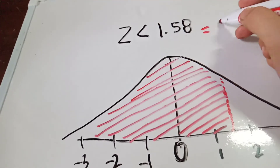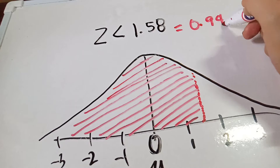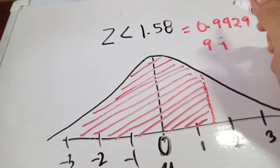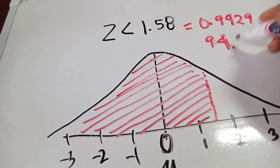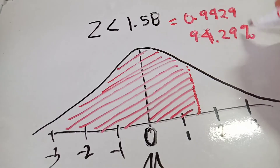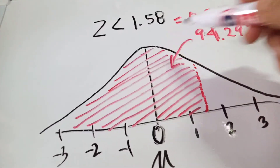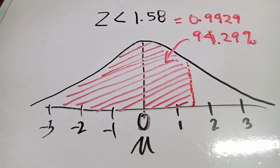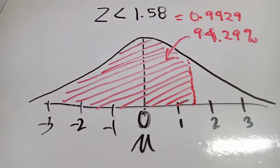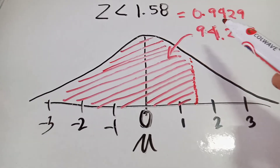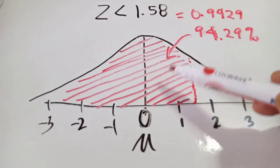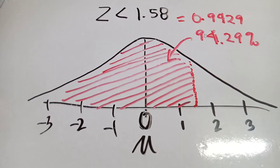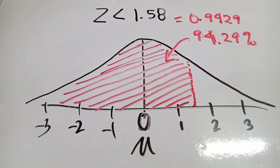So 0.9429 is equivalent to 94.29 percent. This is the table value at the back of your book, and this shaded area is equivalent to 94.29%. This is the usage of the Z-table at the back of your book.